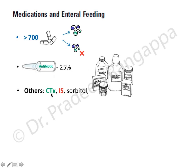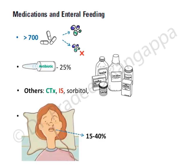If diarrhea is attributed to enteral nutrition, the recommendation is to try continuous infusion. If diarrhea stops with continuous infusion compared to bolus feeding, the bolus itself may be the cause. Continuous infusion of enteral nutrition is encouraged as it can mitigate diarrhea caused by bolus feeding.